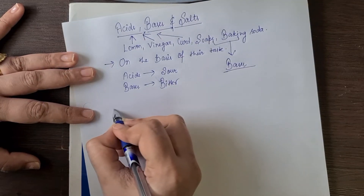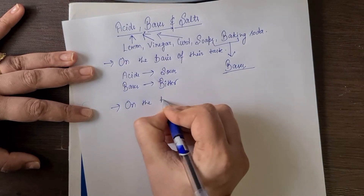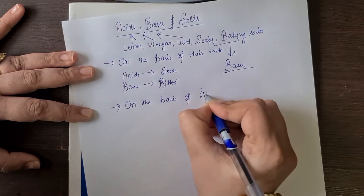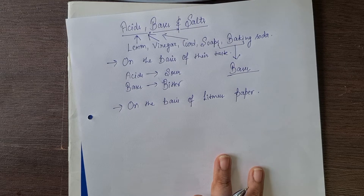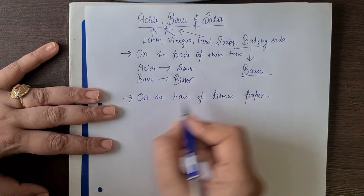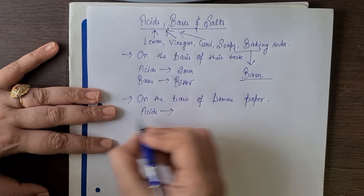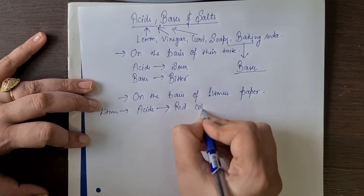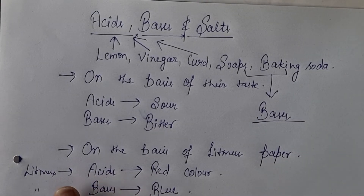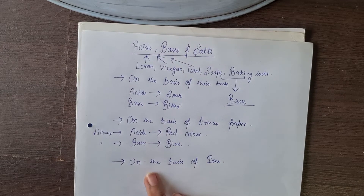The second classification of substances is on the basis of litmus paper. Litmus paper is a substance which we use to classify substances. When we put litmus paper into an acid, it turns red. All acids turn litmus paper red, and all bases turn litmus paper blue.